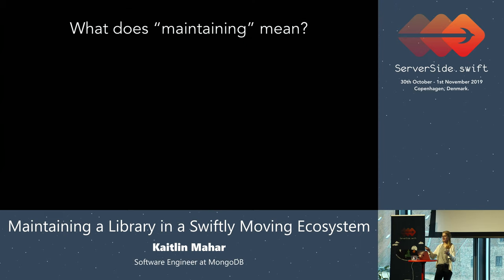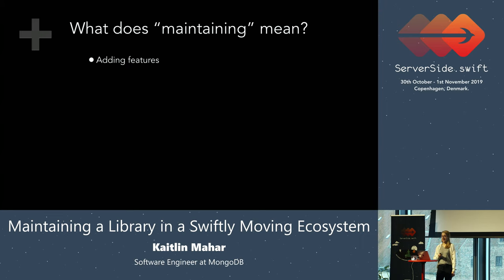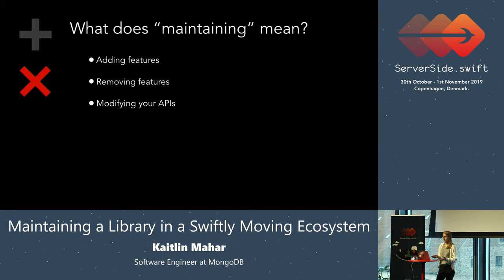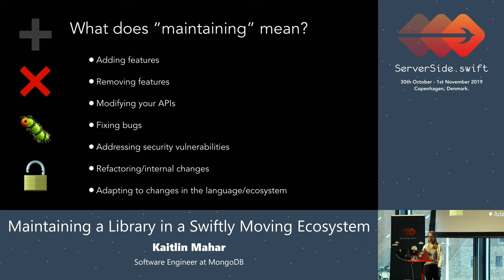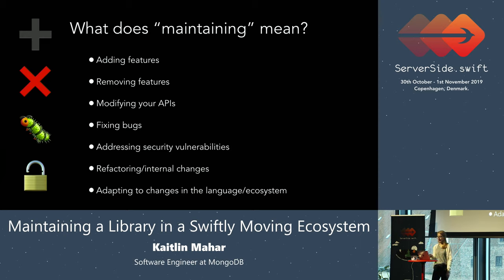Let's start off by defining what I mean by maintaining a library. Maintaining includes adding features, removing features, modifying your APIs, fixing bugs, addressing security vulnerabilities. It can also include refactoring and internal changes, even if they aren't directly user-facing, and adapting to changes in the language and ecosystem. So maybe a new version of Swift comes out and it makes something in your library obsolete, or your library integrates with Vapor and a new Vapor release comes out and you need to adapt to that.